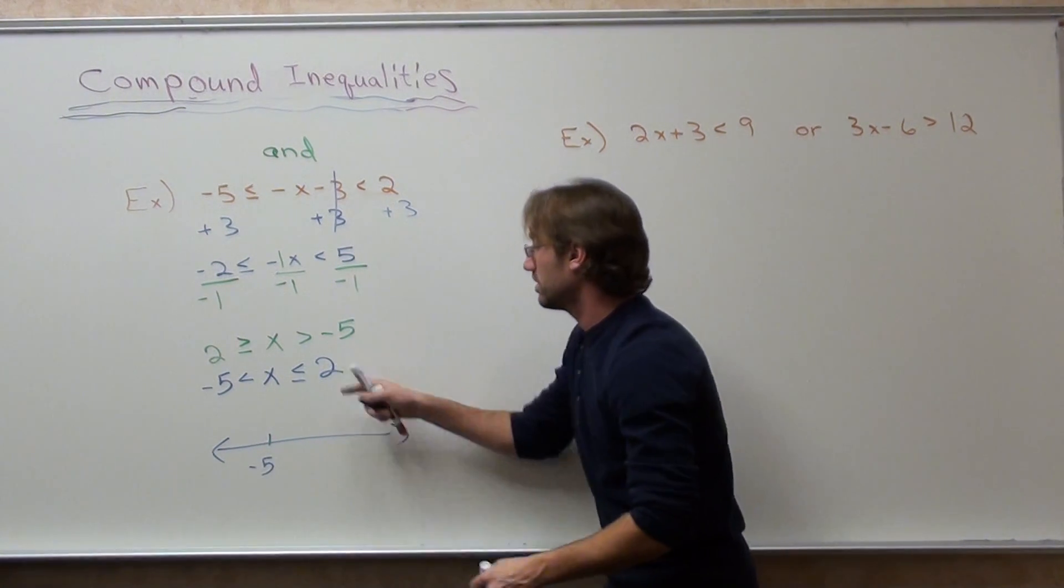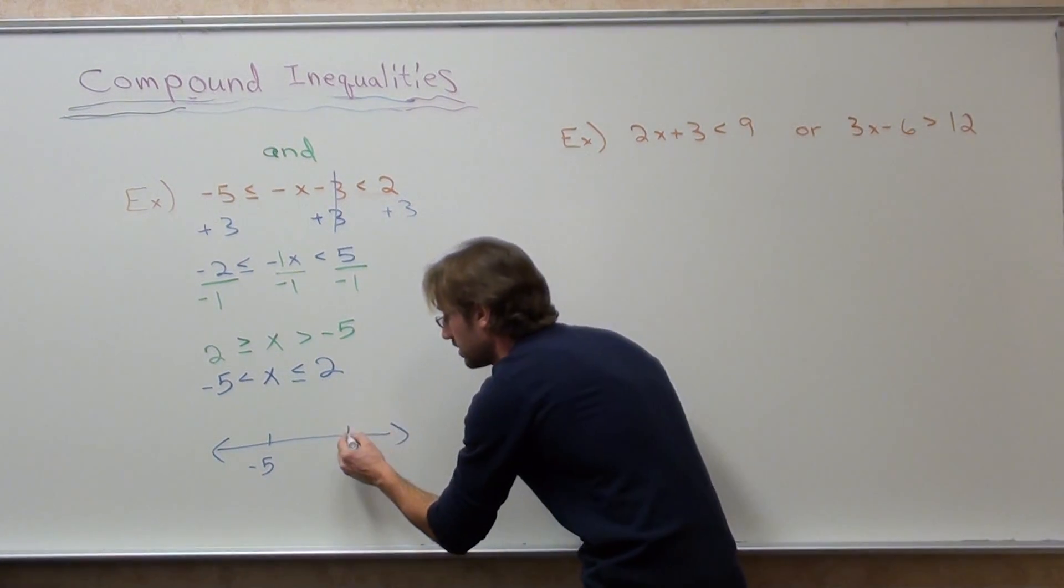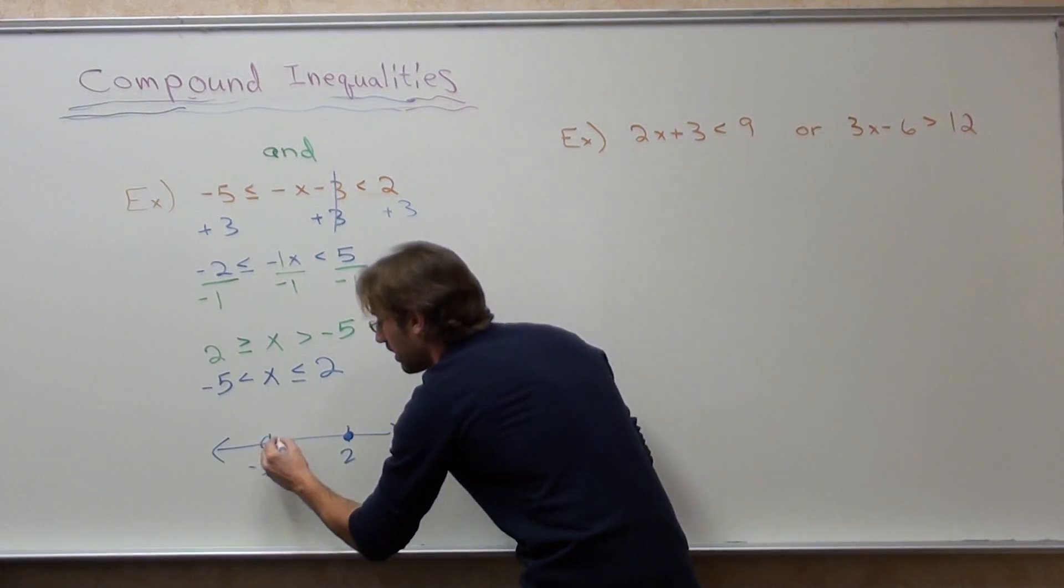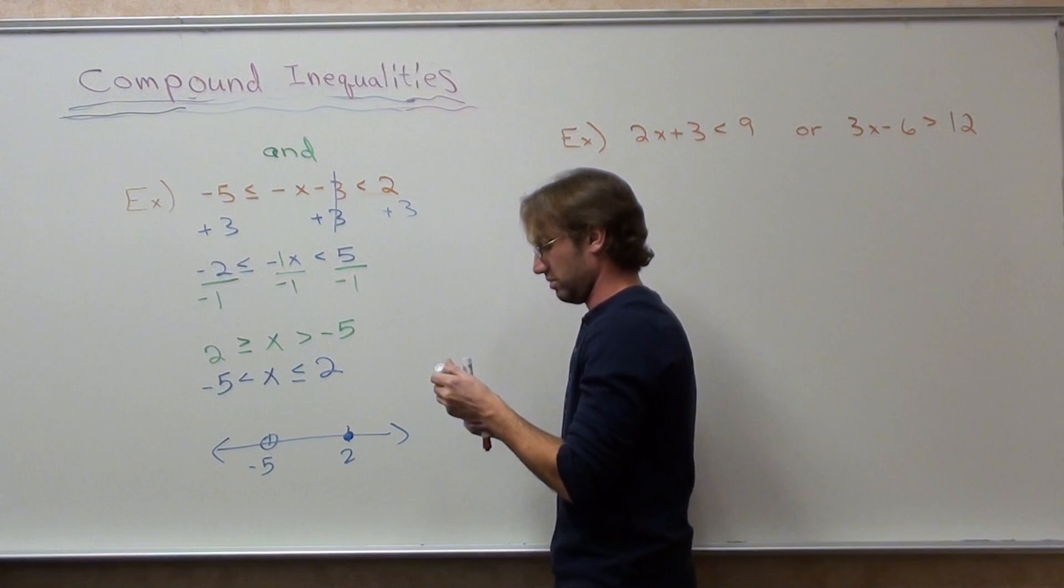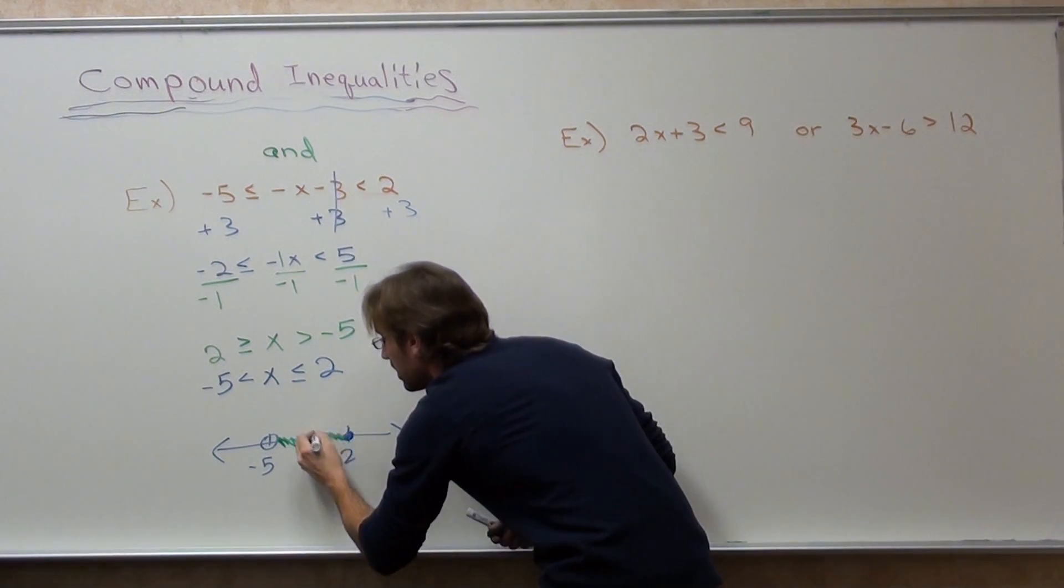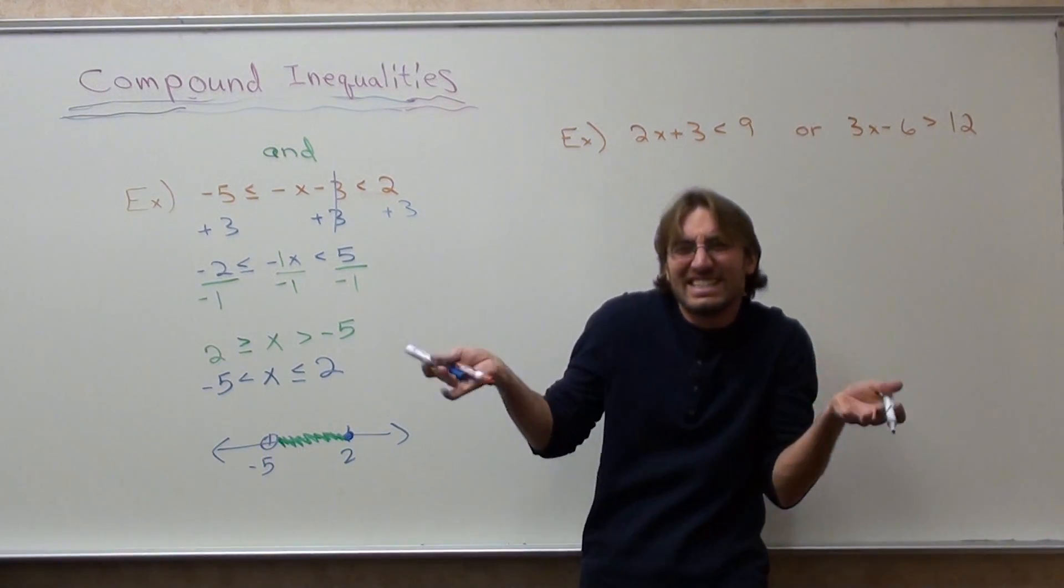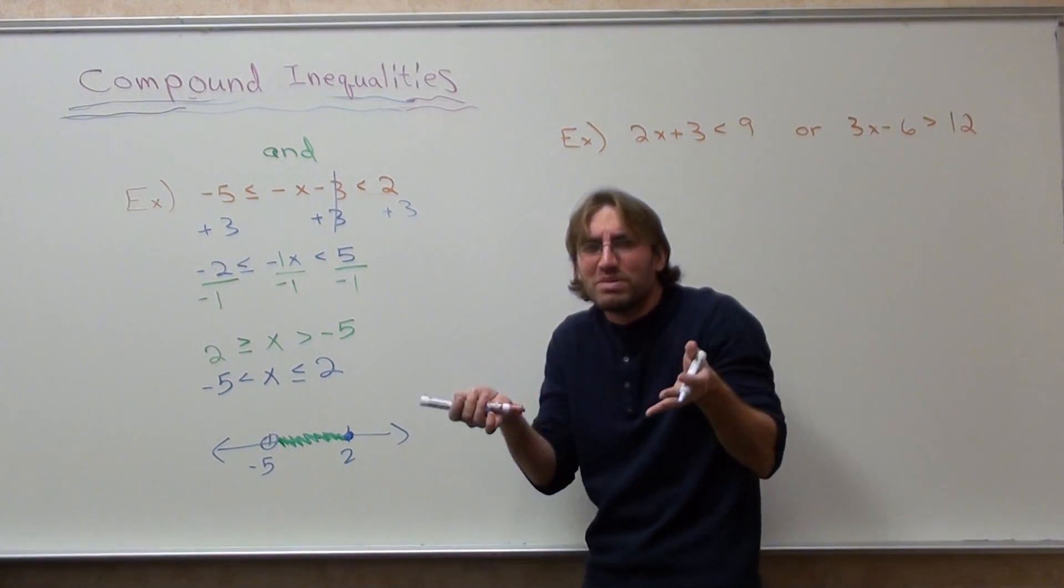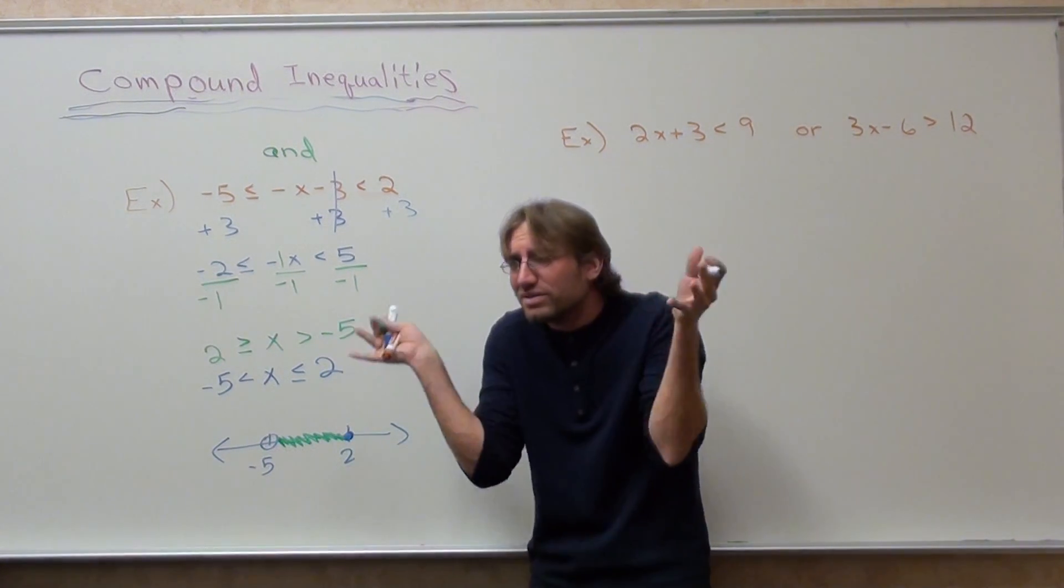Here's negative 5. Here's 2. 2 has a closed circle on it. Negative 5 has an open circle on it. And x is in the middle. I need this and this. I need this and this. An and problem is like, I need this and this. When people say they want something and something, they kind of go like this.